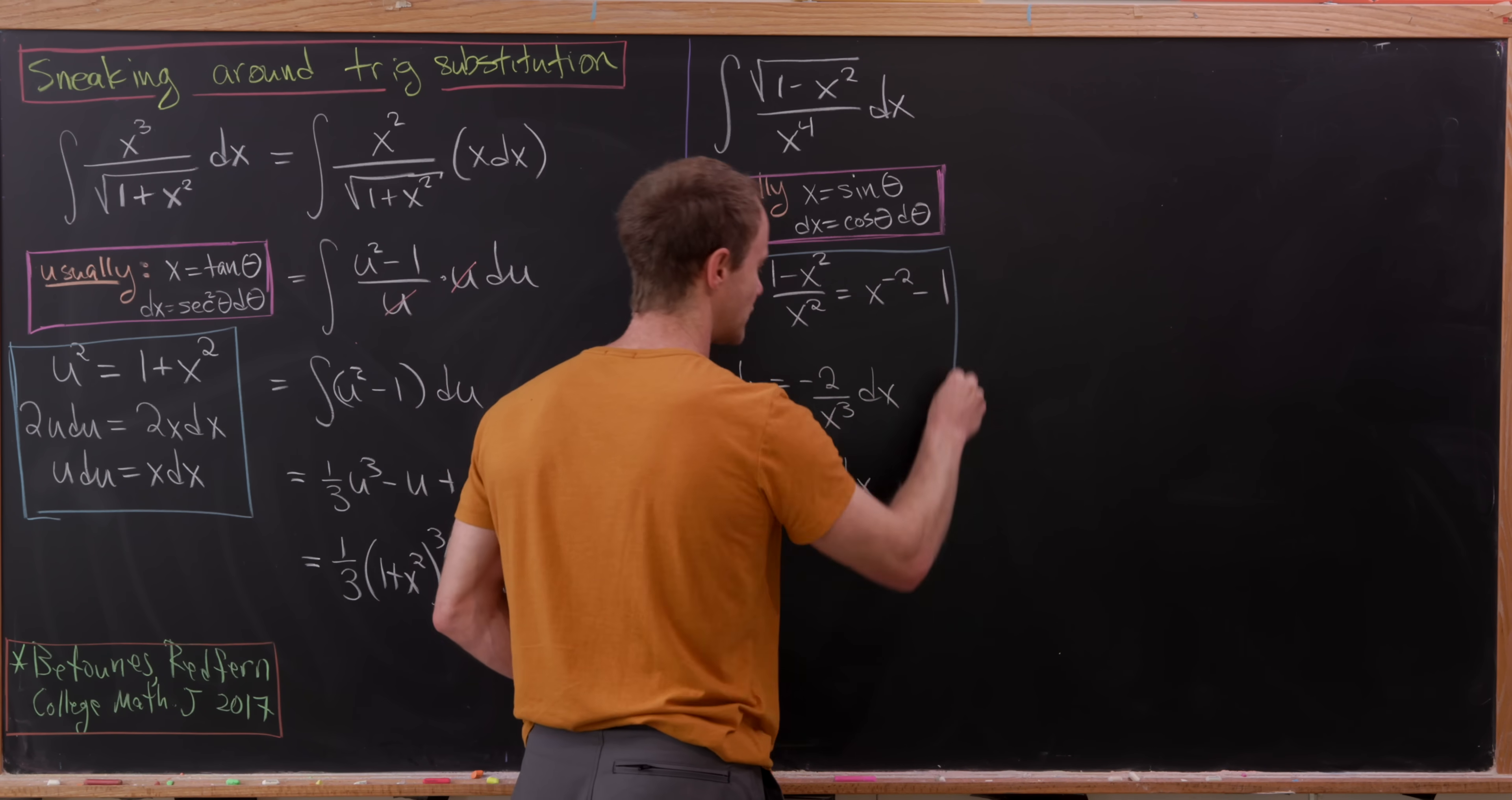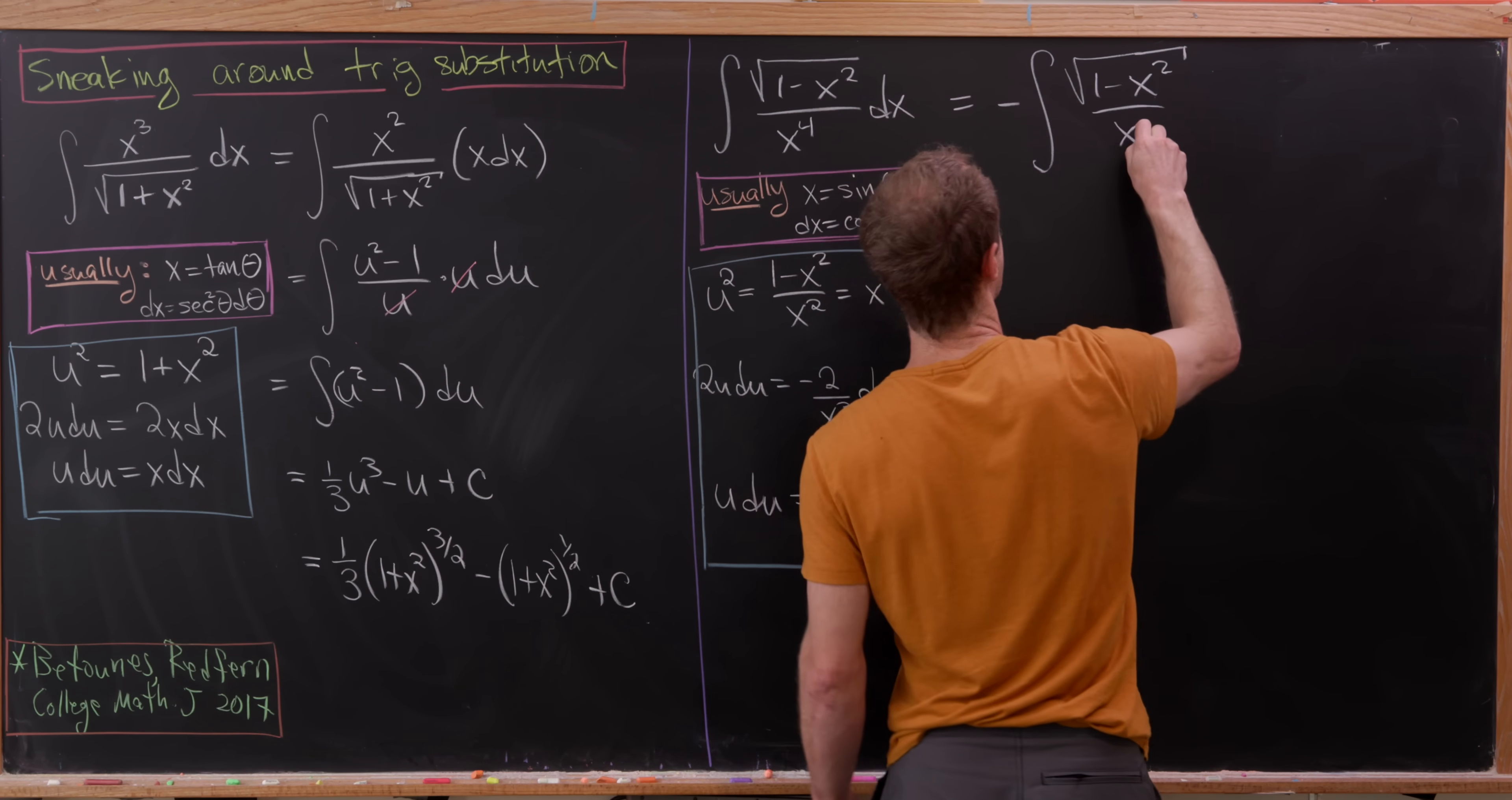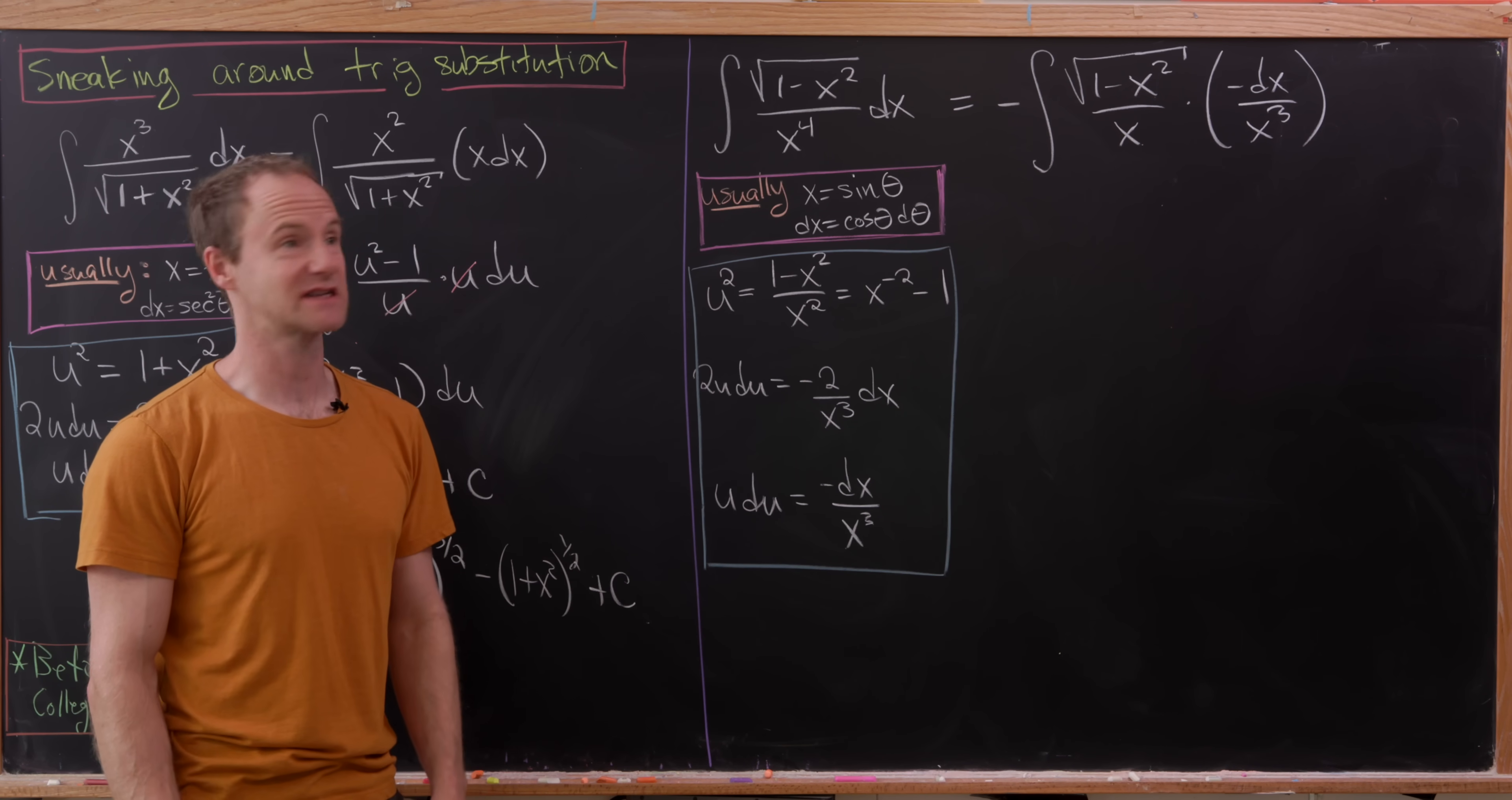Now let's take our original function inside of the integral and see if we can partition it into pieces that work with this substitution. So I'm going to start by putting a minus sign out front because we're going to put a minus sign inside as well for our substitution. And then we'll write this as the square root of 1 minus x squared over x times minus dx over x cubed. So that minus dx over x cubed will eventually become u du. I put a minus sign out there, again, to counteract that.